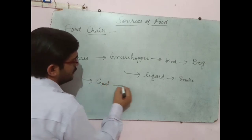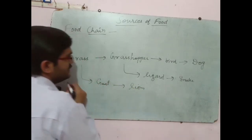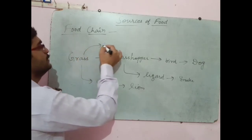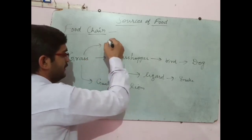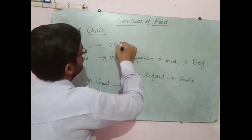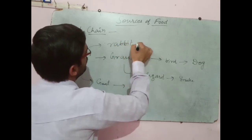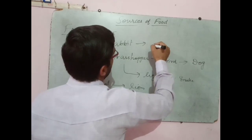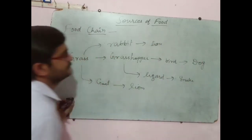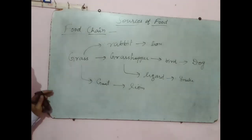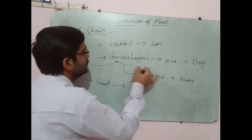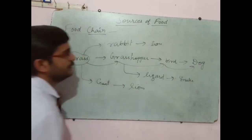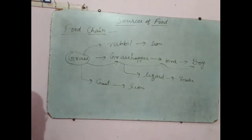Another example: goat is eaten by lion. These are the animals which depend on each other. One more example: grass is eaten by rabbit, and rabbit is eaten by lion. This is the food chain — or we can say this is the sequence in which one food is eaten by the other.